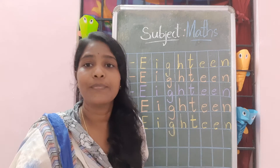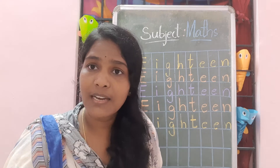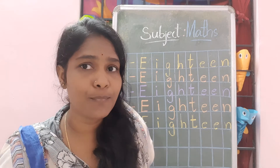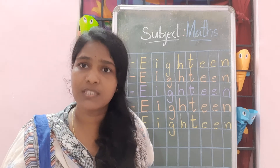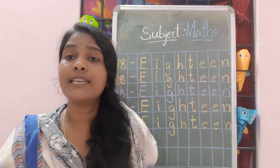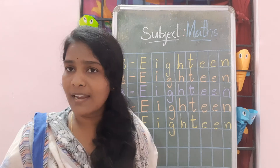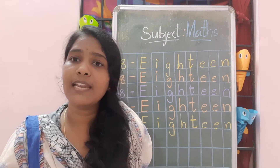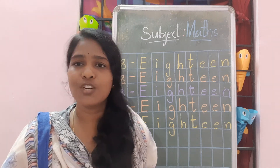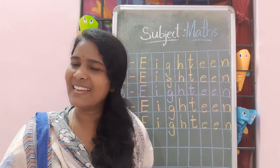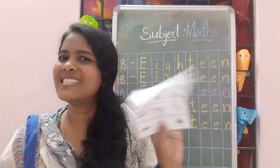Okay. After writing, count 18 objects from your house — any objects. Collect 18 objects together and count them, then show to your parents. Okay, bye. Have a good day.